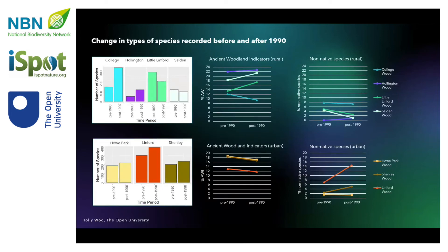By dividing the data into records collected before and after 1990, we could see whether the species composition of rural and urban woodlands has changed since the development of major grid roads, industrial and residential areas in Milton Keynes. The proportion of ancient woodland indicators in the species list for all three urban woodlands has declined since 1990, while the proportion of ancient woodland indicators in the species lists for the rural woodlands has increased — that is for most of them, apart from College Wood, which is a rural plantation on an ancient woodland site, now in the process of restoration.